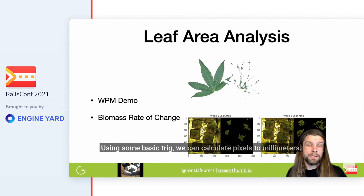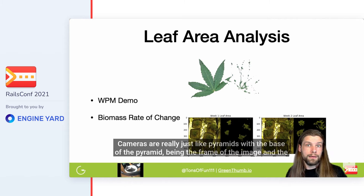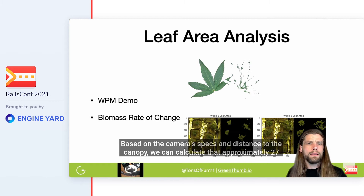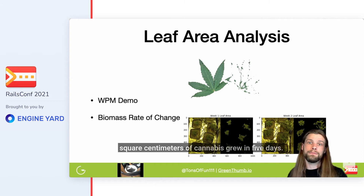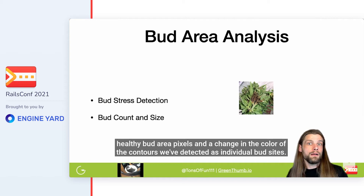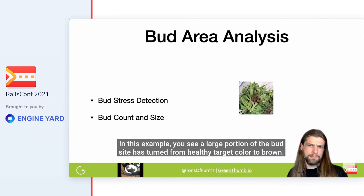Using some basic trig we can calculate pixels to millimeters. Cameras are really just like pyramids, with the base of the pyramid being the frame of the image and the peak being a horizontal and vertical angle of view. Based on the camera specs and distance to the canopy, we can calculate that approximately 27 square centimeters of cannabis grew in five days. Bud site detection is similar to leaf stress — we're looking for a rate of growth or decay in healthy bud area pixels and a change in the color of the contours we've detected as individual bud sites.